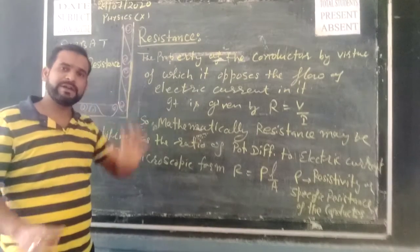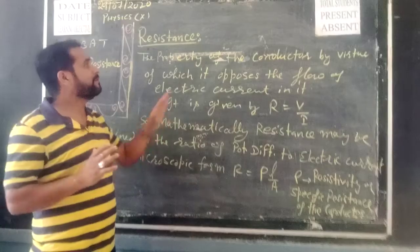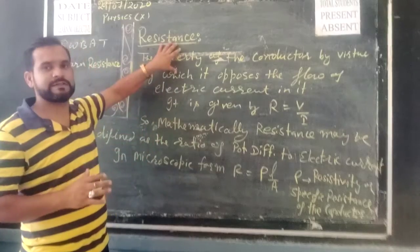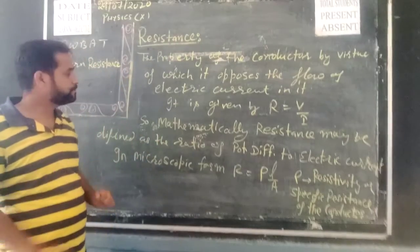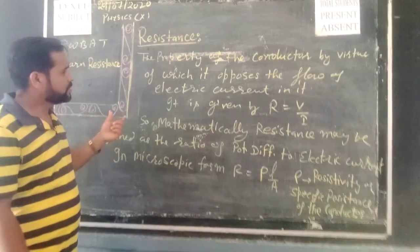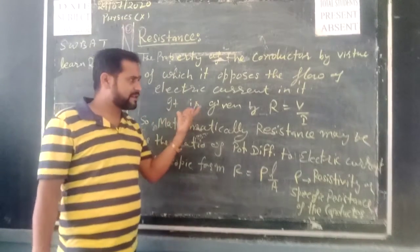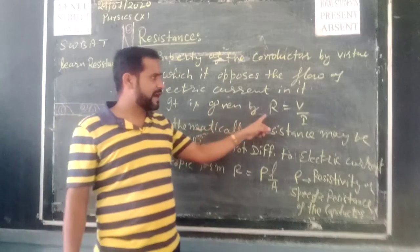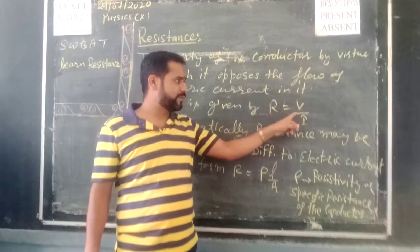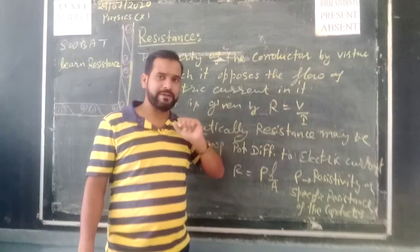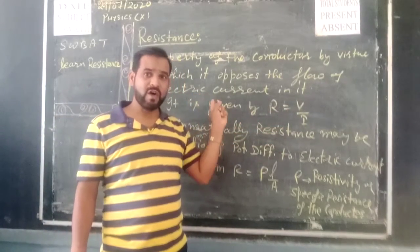Every conductor has some resistance. So, what is the formula for resistance? That is R is equal to V upon I, from Ohm's law.